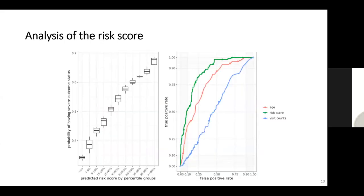The predicted risk score showed proper characteristics to represent severity of COVID-19 patients. The left figure shows distributions of different percentile groups of patients based on their risk severity score — the median severity score increased with higher percentile groups. The right figure shows that the predicted risk score outperformed age and total hospital visit count as predictors, with the green curve (risk score) showing better AUC than the red (age) and blue (total visit count) curves.